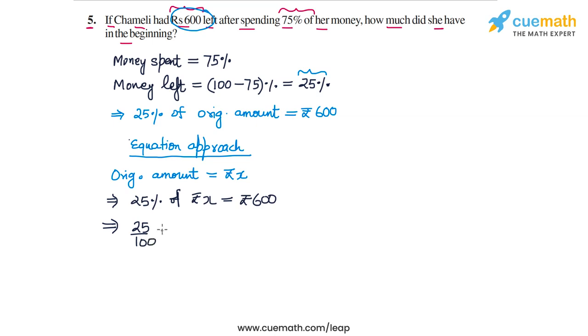25 by 100 into X is equal to 600 and from here we can find the value of X. 100 by 25 is 4 and now we cross multiply this 4 with 600. So we get X equal to Rs. 2400.